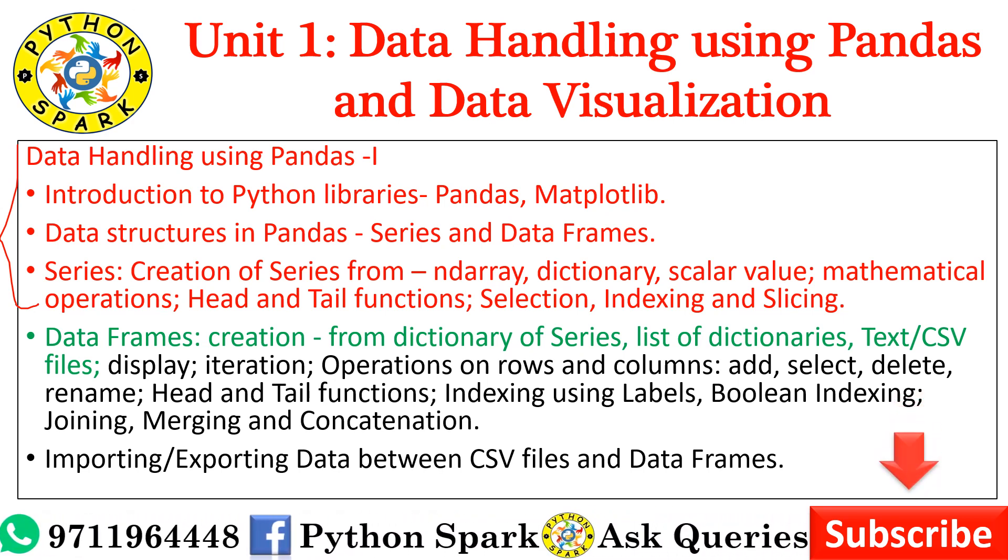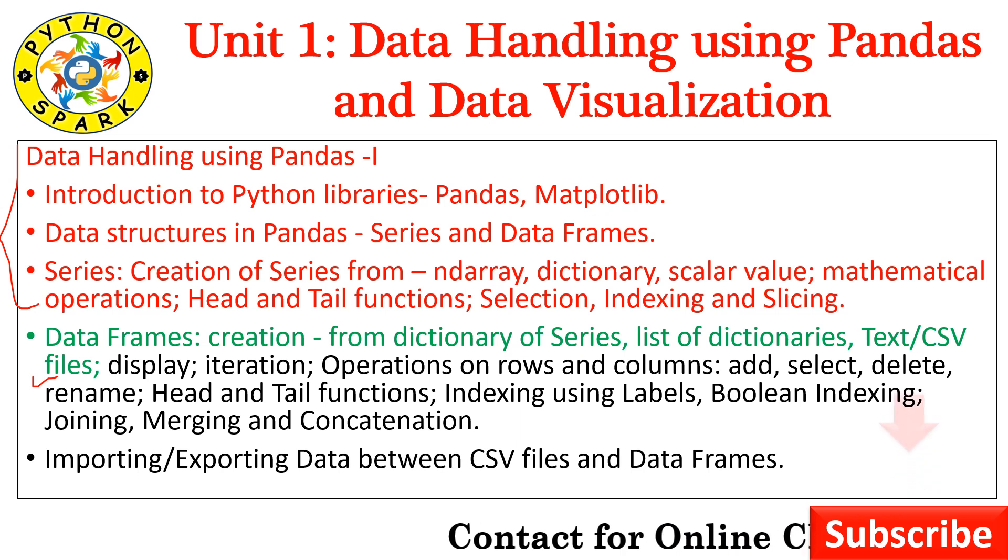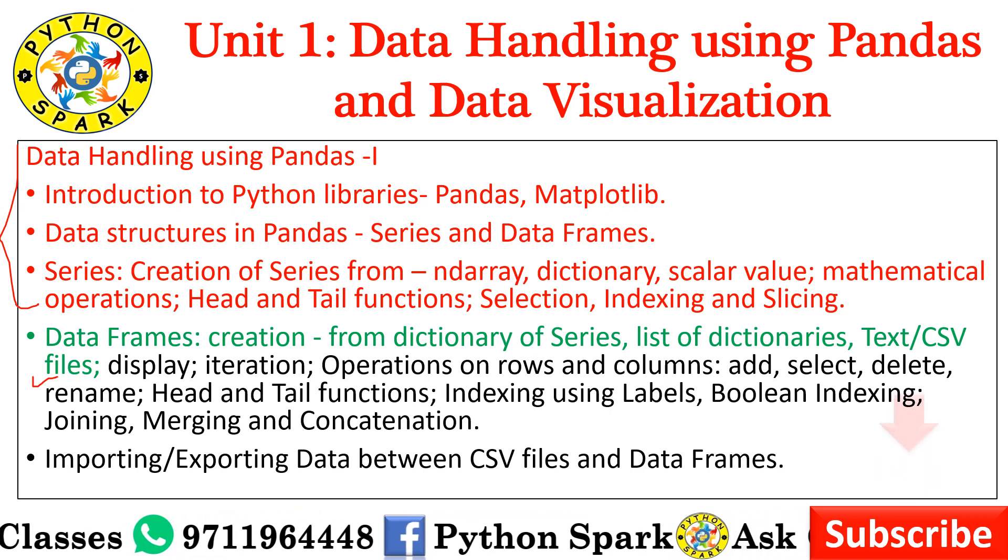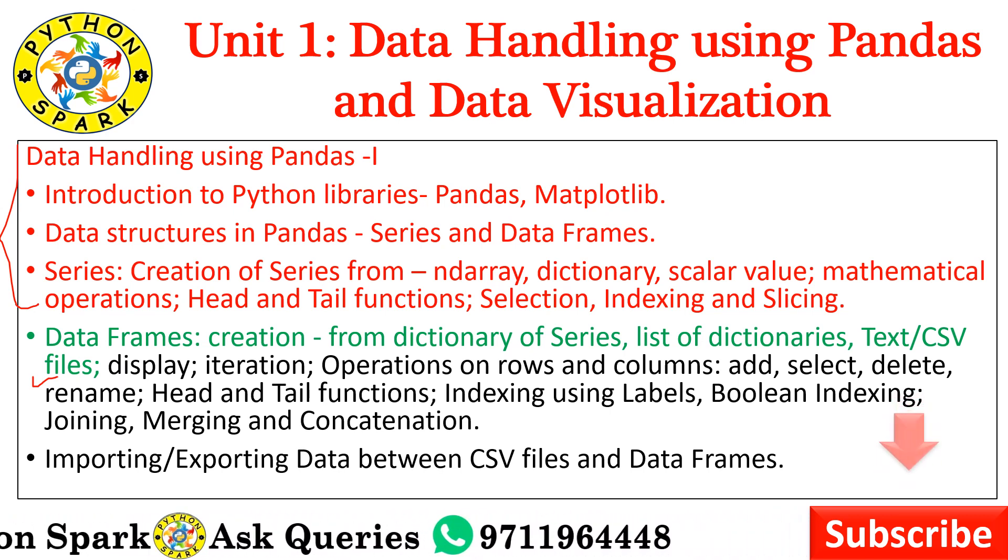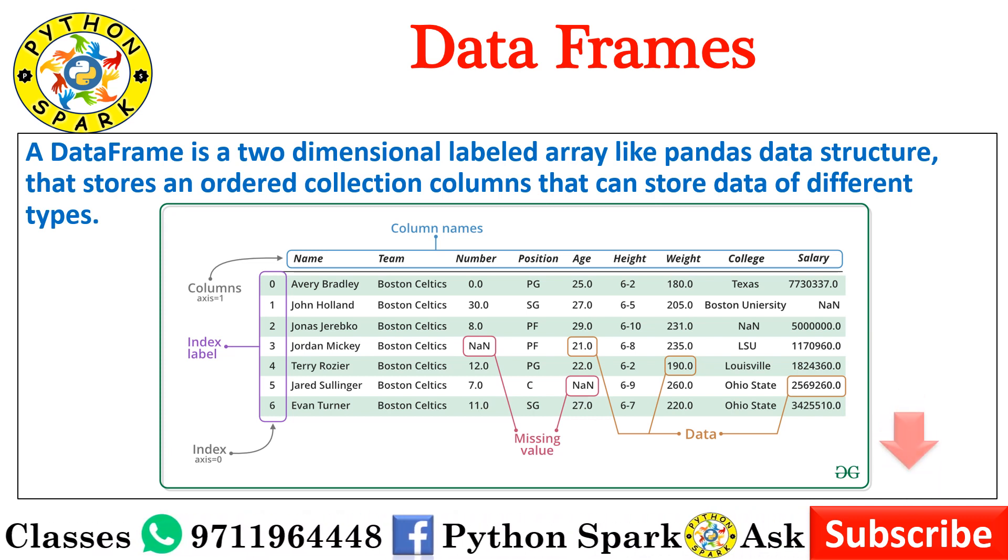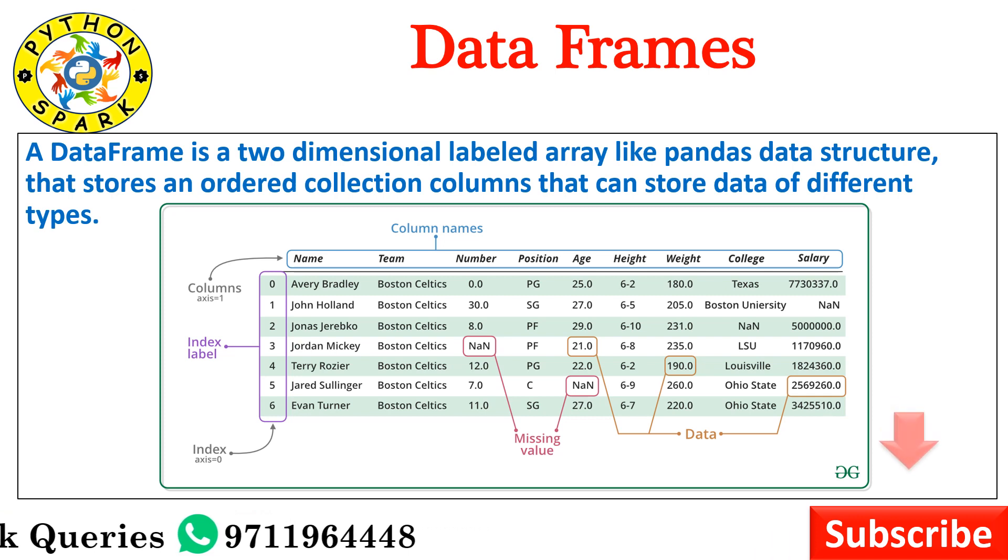I will give you a link to visit and check, then you will understand the third part. Otherwise you will not be able to see the DataFrame, which is the green color portion. A DataFrame is a two dimensional labeled array like Pandas data structure that stores an ordered collection of columns that can store data of different types. The DataFrame is two dimensional - we have seen a Series, now we are seeing DataFrames.